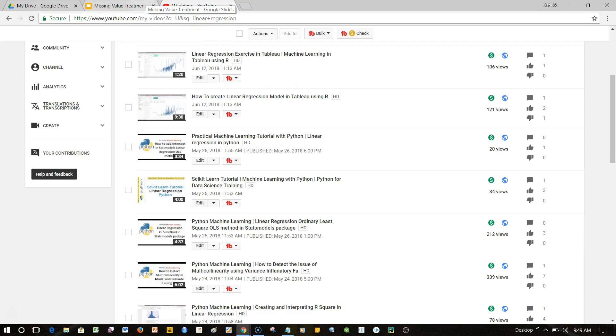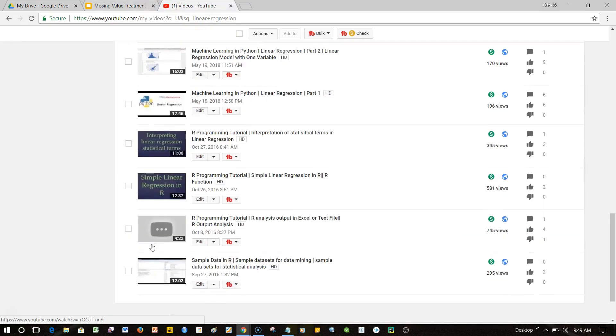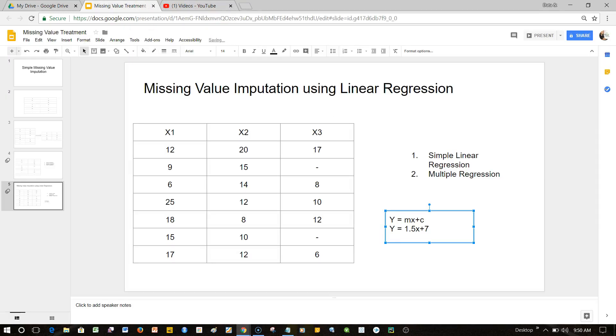Generally, how the equation comes is y equals maybe 1.5x plus, let's say c is maybe 7, for example. That's what these videos will basically show you - for example, linear regression ordinary least squares method, or how to create a linear regression model in Tableau using R. Whichever way you're finding it useful - Tableau, Python, or even R - you can use that.